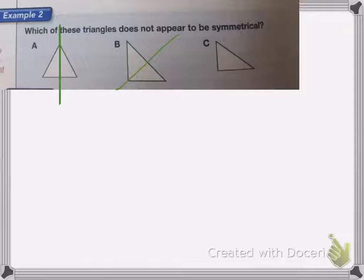On C, this length here is different from this length here. I will not be able to draw any line to make it look the same on either side. C is my triangle that is not symmetrical.